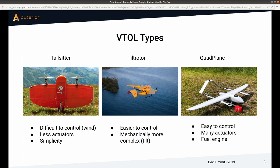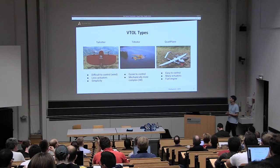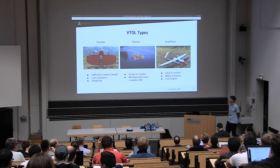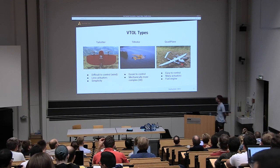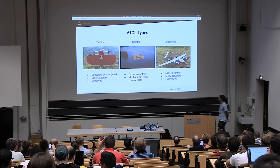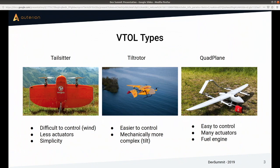We also support tilt rotors, shown in the middle — generally easier to control, though mechanically more complex because they tilt motors to achieve the transition to forward flight. This can cause coupling effects during the transition, which we need to handle. The third type is the quad plane, or standard VTOL — basically a brute force approach where you add multi-copter motors to a plane. It's the easiest to control, used by many companies. It has many actuators, which adds weight but also gives redundancy.